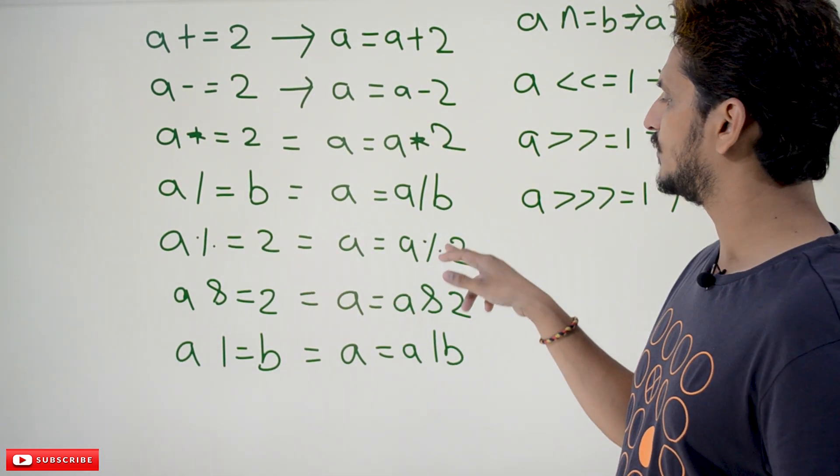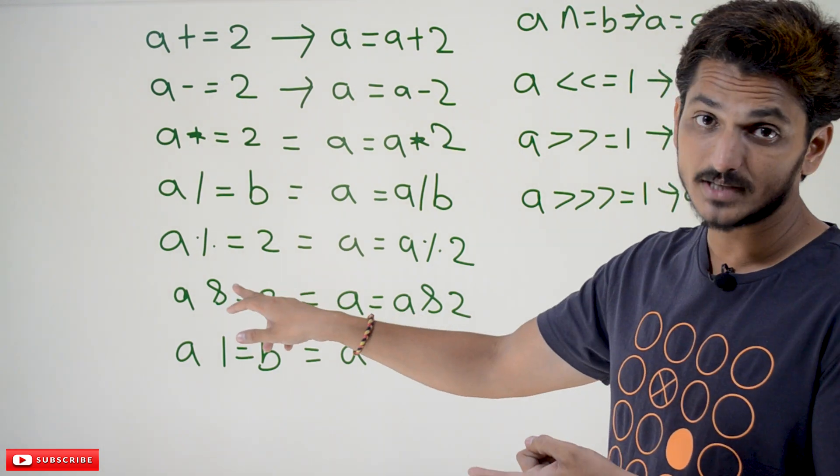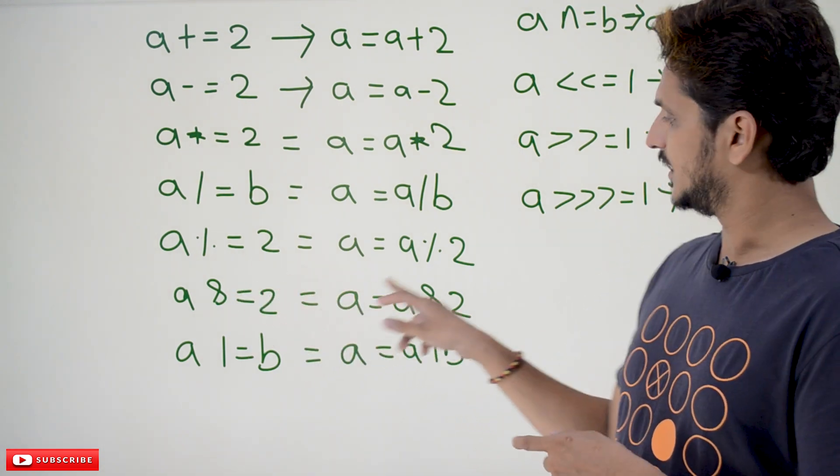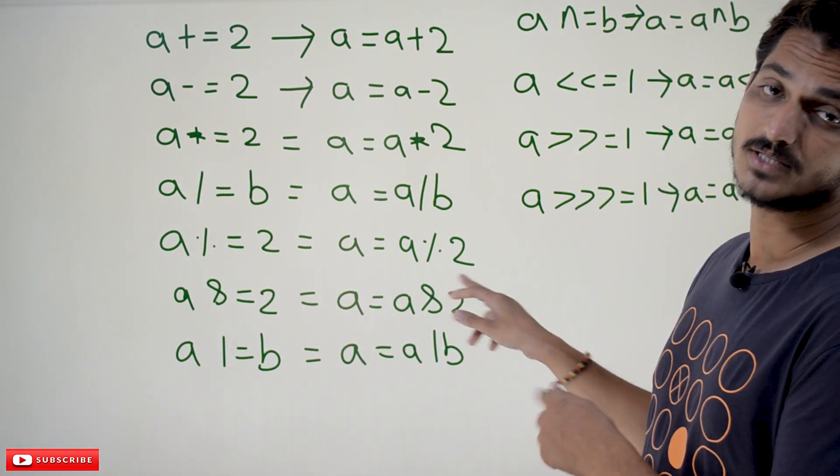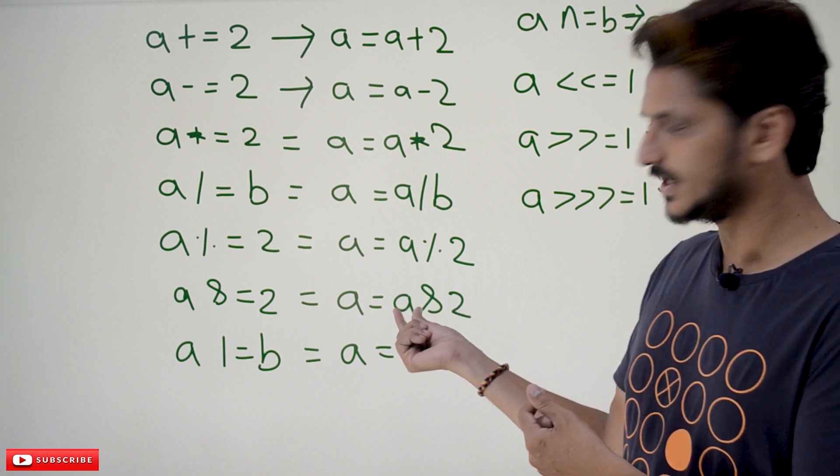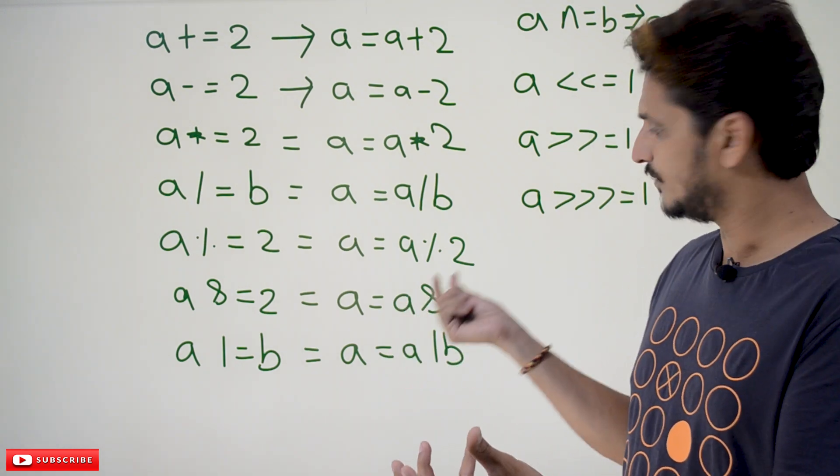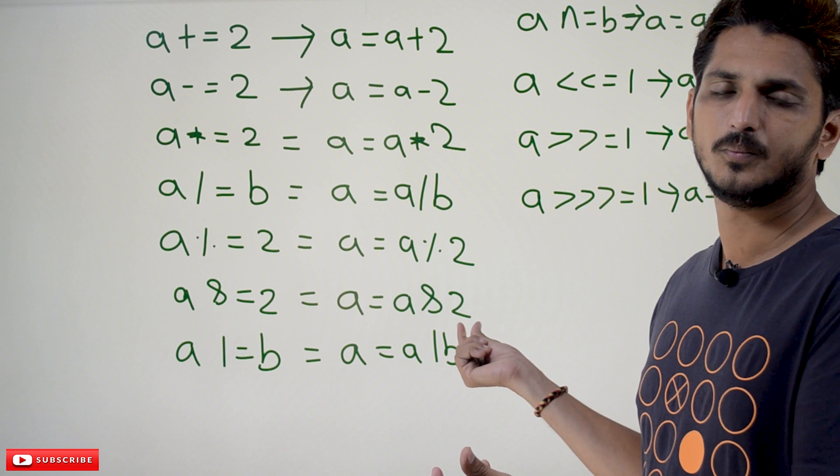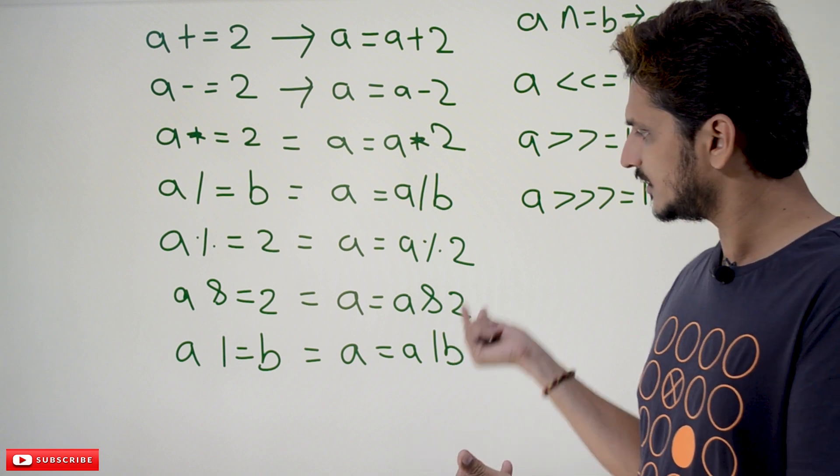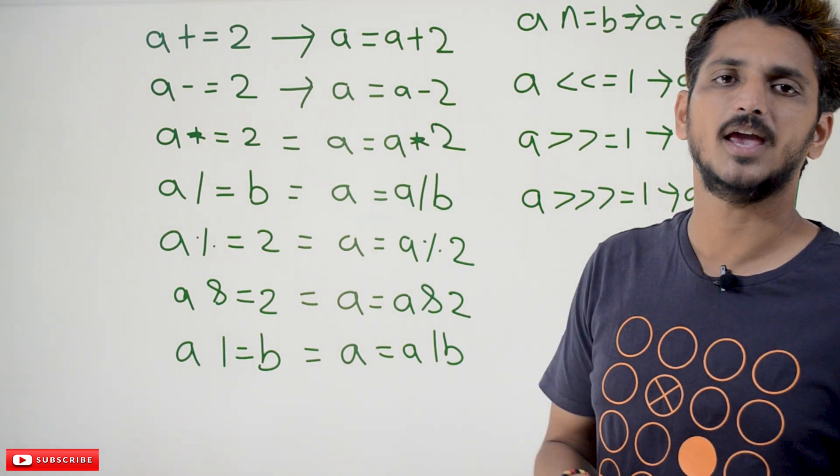Similarly, a modulus equal to 2 means a is equal to a modulus 2. a bitwise AND equal to 2 means a equal to a bitwise AND 2. The value that is present in a, assume 5, 5 bitwise AND 2, what is the output you are going to get, that is going to be assigned to a again.